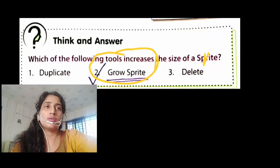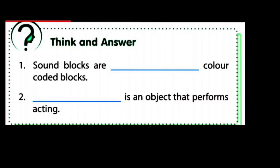Now the next exercise is also a Think and Answer exercise. In this exercise you have to fill the correct answer in the given space. This exercise is given on page number 38. The first question is: Sound blocks are dash color coded blocks. Which color is used for sound blocks? The answer is pink and magenta. So write down this answer — pink or magenta.